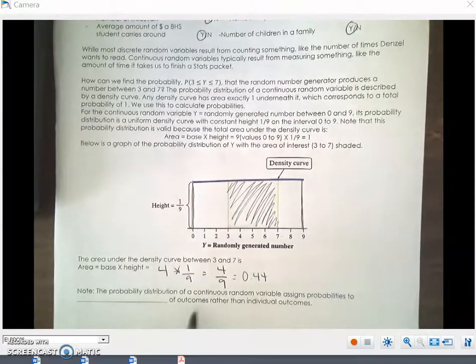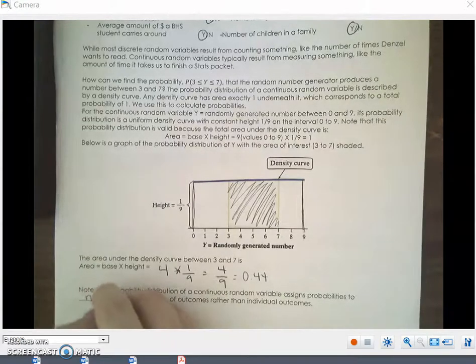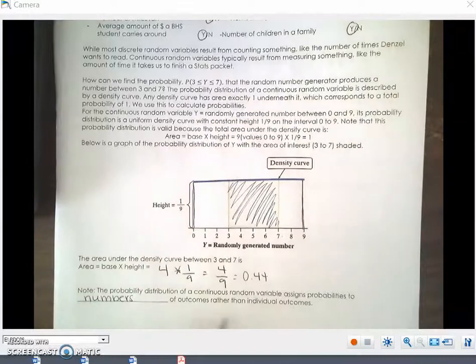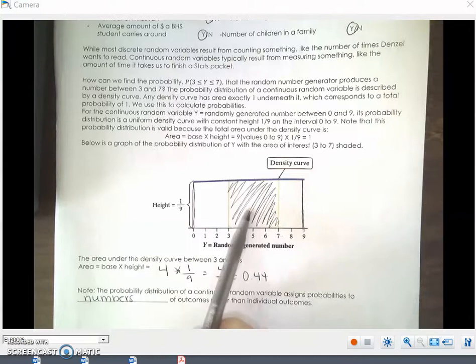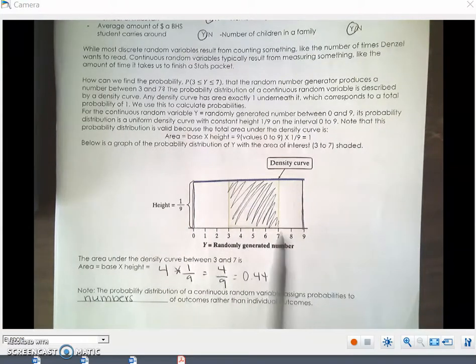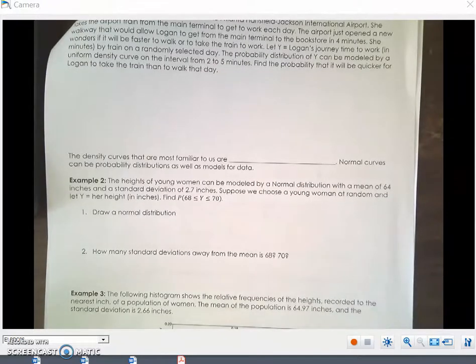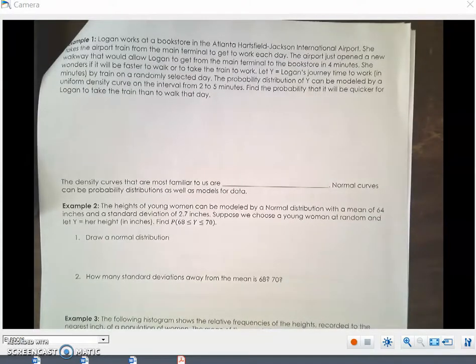So the probability distribution of a continuous random variable assigns probabilities to numbers of outcomes rather than individual outcomes. All of these are probabilities of the different outcomes, not one single outcome.